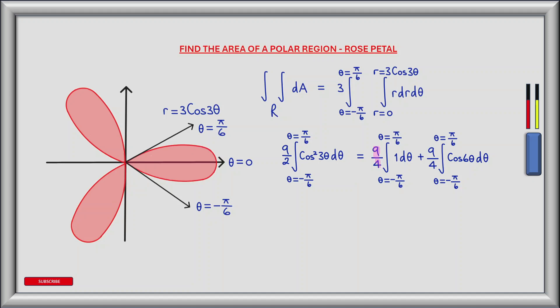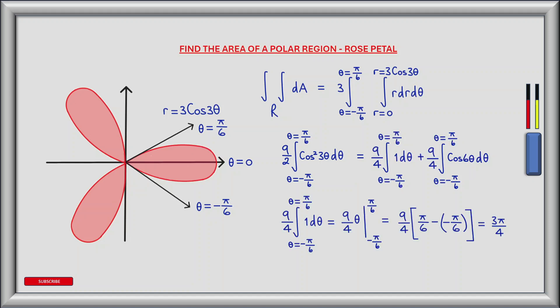We now have 9 over 4 multiplied by the integral from theta equals minus pi over 6 to theta equals pi over 6 of 1 d theta, plus 9 over 4 multiplied by the integral from theta equals minus pi over 6 to theta equals pi over 6 of cos 6 theta d theta. Evaluating the first integral: the antiderivative of 1 is theta, multiplied by 9 over 4. Evaluating between minus pi over 6 and plus pi over 6 gives 9 over 4 times (pi over 6 minus minus pi over 6), which evaluates to 3 pi divided by 4.